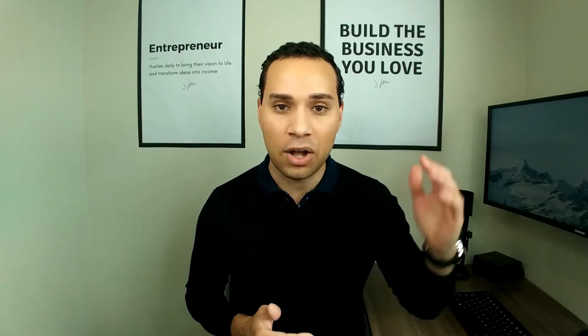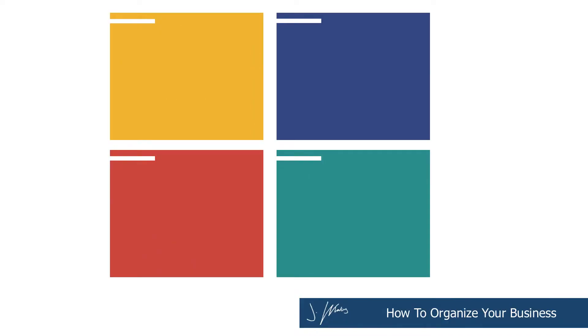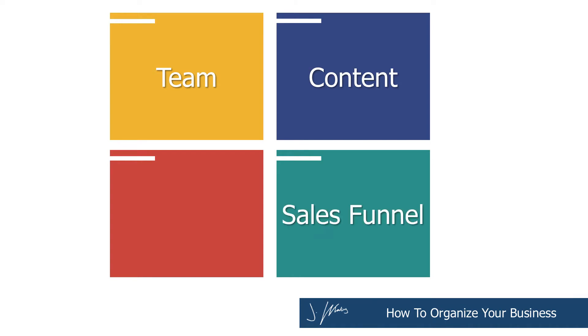Let's jump into those four systems, and then at the end I'll walk you through some of the productivity tools we like to use to support this system. The four quadrants of the digital business system are team, content, sales funnel, and product.